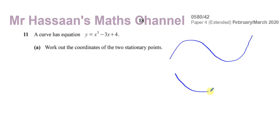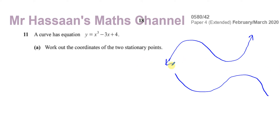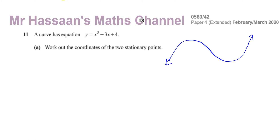It could have a shape where it goes up and then up again, or another shape. Because the coefficient of x cubed is positive, it's definitely got the shape where it goes up and then up again — this will continue down on the left and continue up on the right. If it were a negative x cubed, it would have the opposite shape. I'm just introducing you to the topic; you don't really have to know this to answer part A.